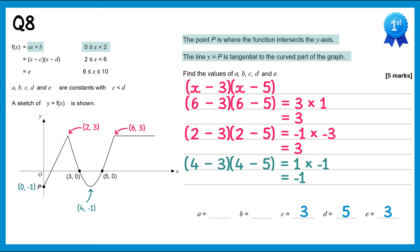Looking at the first straight line, we know it runs from (0, -1) to (2, 3). Drawing a gradient triangle: horizontal distance is 2, vertical distance is 4, so the gradient is 4 divided by 2 equals 2. The intercept is at -1, so y equals 2x minus 1. Comparing to ax plus b, we get a equals 2 and b equals negative 1. The question is now complete.